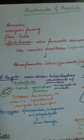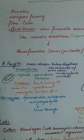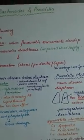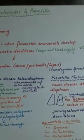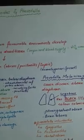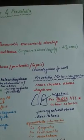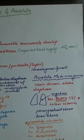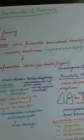Bacteroides consists of the genus Bacteroides fragilis, whereas Prevotella consists of a genus named Prevotella melanogenica.